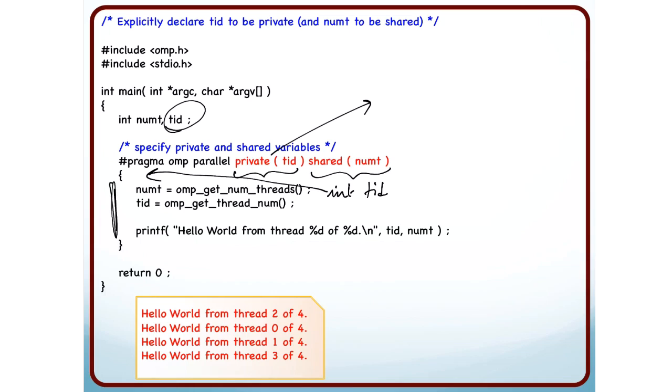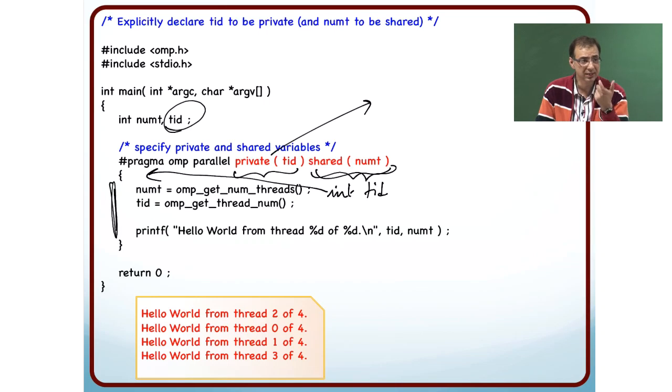And what does shared mean? Shared means that the variable is global, it is shared by all the threads. All the threads get to see the same memory location. In the case of private, the memory location is different for each thread where that variable is stored. In case of shared, it is the same memory location that they are accessing.